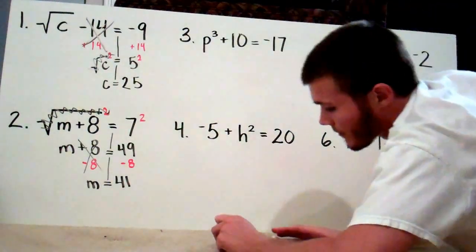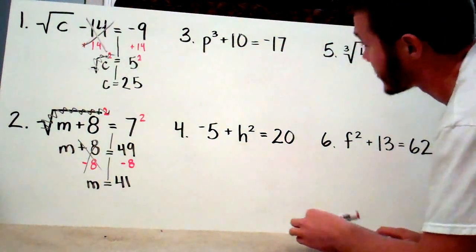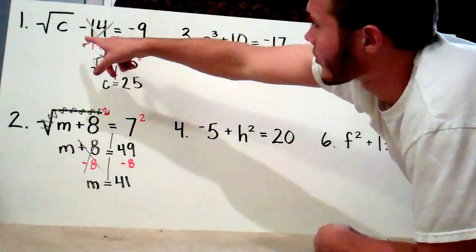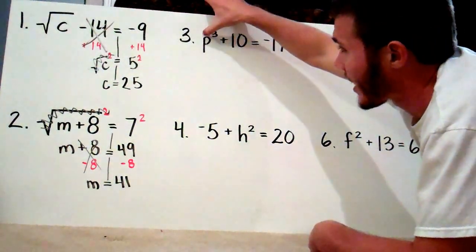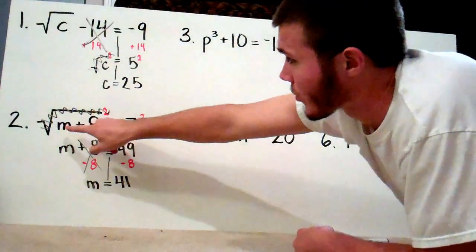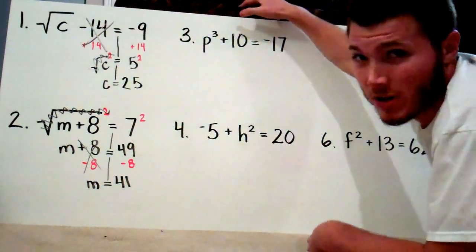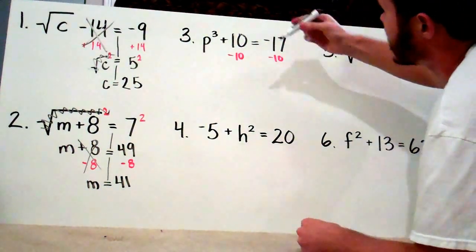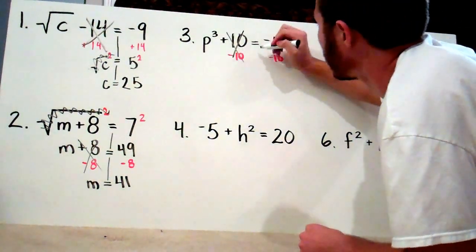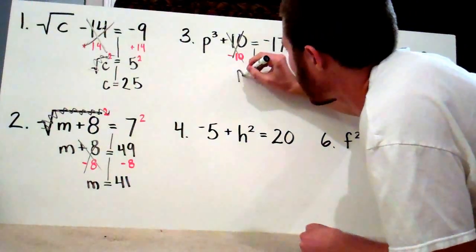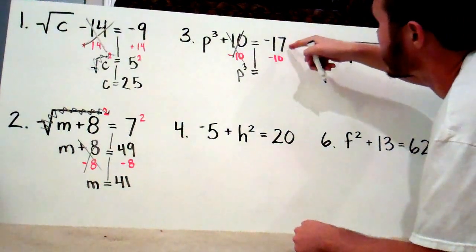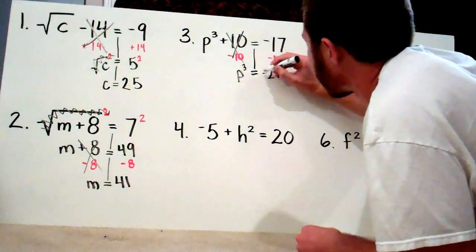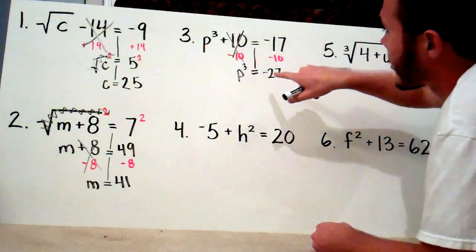Number 3: P to the third power plus 10 equals negative 17. Since the cube only applies to the variable — not to that other number — the first thing I want to do is get rid of that plus 10. So I do the inverse, which is minus 10, on both sides. These cancel out, leaving p to the third power. Negative 17 minus 10: same sign, sum — 17 plus 10 is 27, but since they're both negative, the answer is negative 27. So p to the third power equals negative 27.